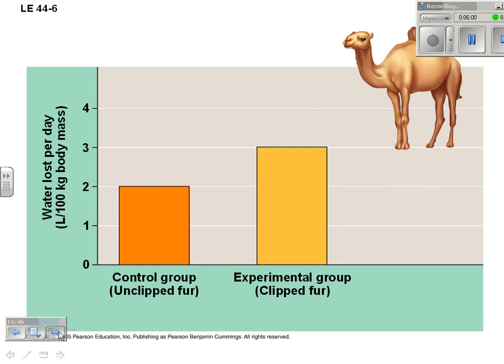For a desert animal like a camel, an experiment was done where fur was clipped in one group and left unclipped in the control group. They lost one more liter per 100 kilograms of body mass without fur. You would think the fur would make them hot, but it actually traps water in.